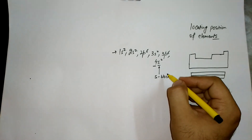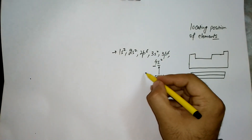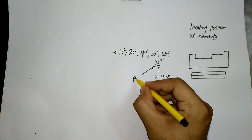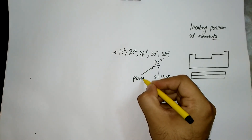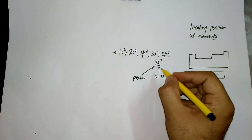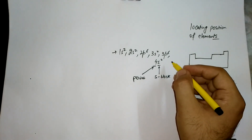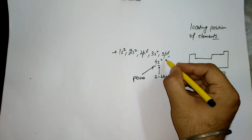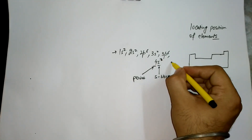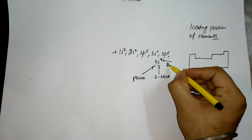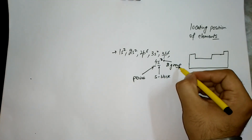This s-block element is having period number 4. Similarly, looking at the valence electrons in the s subshell — here we are having two electrons — so the element belongs to the second group. This is the way of finding the period, group, and block for s-block elements.